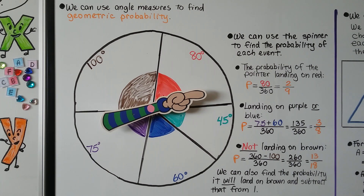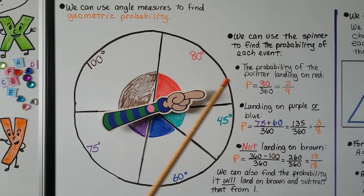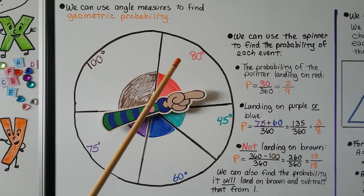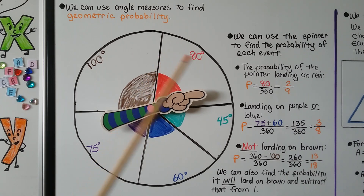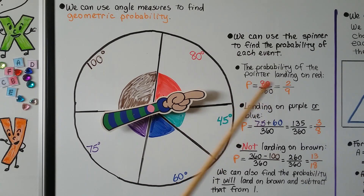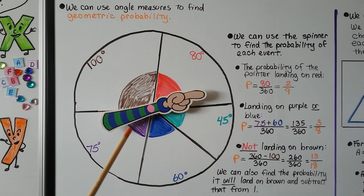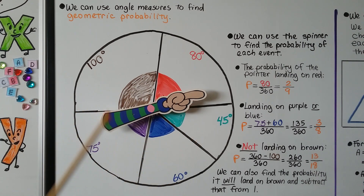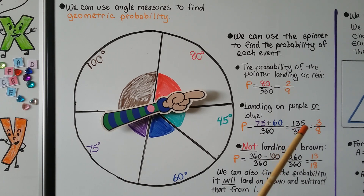We can use angle measures to find geometric probability using a spinner. The probability of the pointer landing on red is 80 over 360, which simplifies to 2 ninths. The probability of landing on purple or blue is 75 plus 60 over 360, which is 135 over 360, simplifying to 3 eighths.